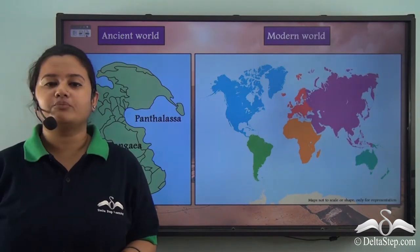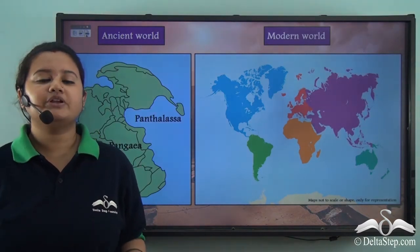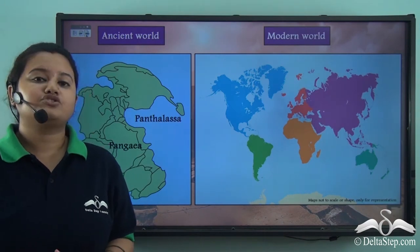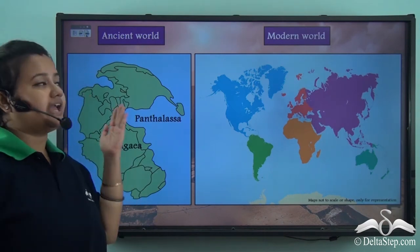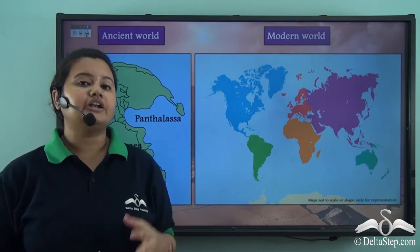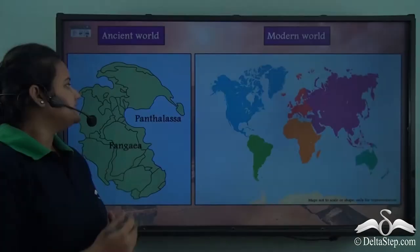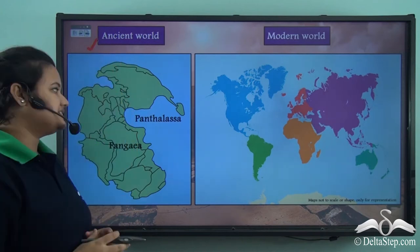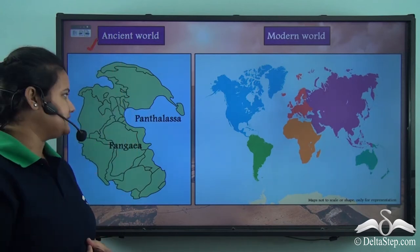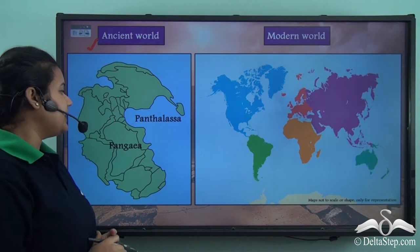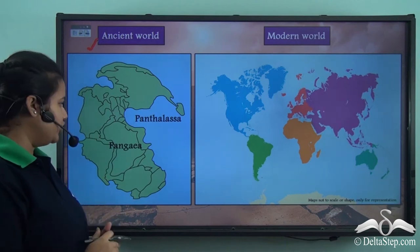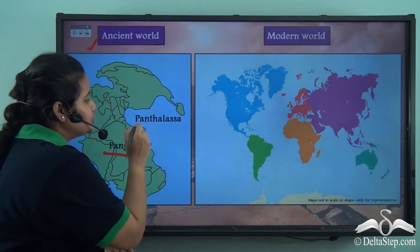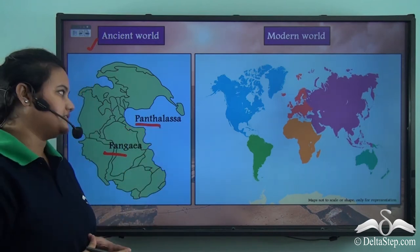The first and foremost factor is the movement of tectonic plates. This is the same factor that transformed the ancient world into a new one. Here we have the picture of our ancient world. In the ancient world, there was a super continent called Pangaea and there was a super ocean called Panthalassa.